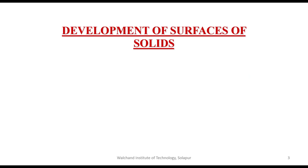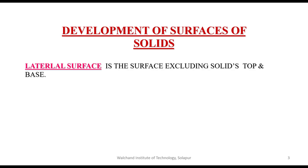Development of surfaces of solids. Consider the object hollow and made up of thin sheet. Cut the object and open it from one side and unfold the sheet completely. Then the shape of that unfolded sheet is called the development of lateral surfaces of that particular object. The lateral surface is the surface excluding the solid's top and base.